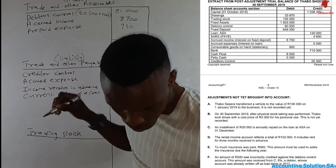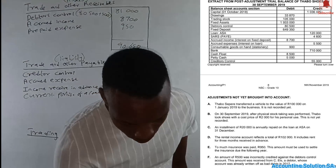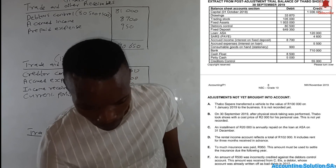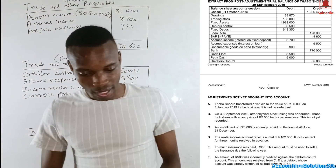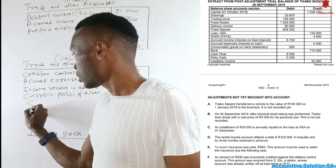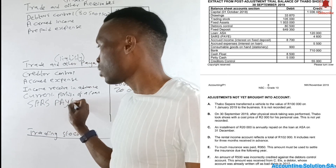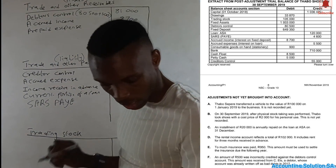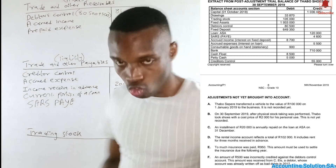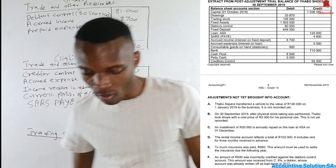For the trading other payables note, we don't have any other transactions to adjust. Adding the amounts — creditors control 55,000, accrued expense 5,000, current portion of loan 3,000, income received in advance 20,400 — gives a total. We also have SARS PAYE on the credit side of the trial balance, which is also part of trading other payables. Adding everything together gives a total of 105,500.